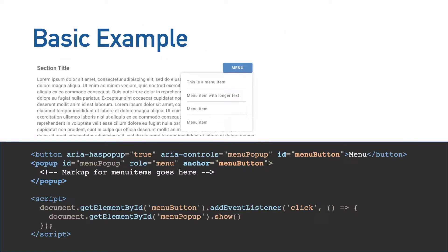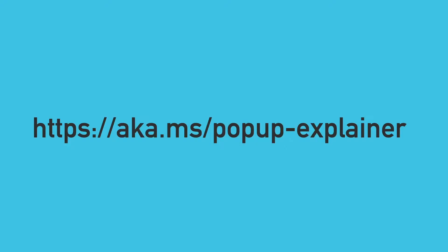Let's take a look at a basic example of popup and how it works. We have a button and a popup element, and to tie the button to the popup, we use our button ID equals 'menu-button' and use an anchor attribute set to that button ID. Currently, popup menus are not visible until show is called by the author, so we do need some script here. You can read more about the new popup proposal at aka.ms/popup-explainer.